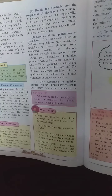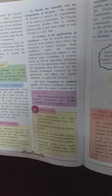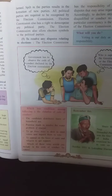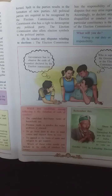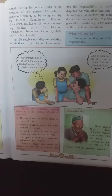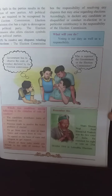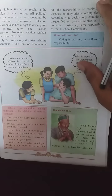Fourth, give recognition to political parties. We have a multi-party system in our country and new parties continue to be formed. All political parties are required to be recognized by the election commission, which also has the right to de-recognize any political party and allots election symbols to them. Fifth, to resolve disputes relating to elections — declaring any candidate as disqualified or conducting a re-election in a particular constituency is the responsibility of the election commission.